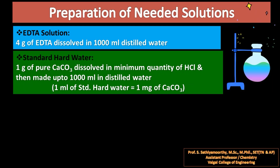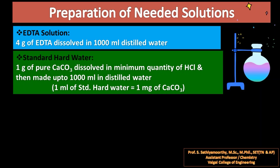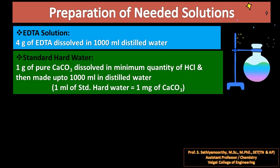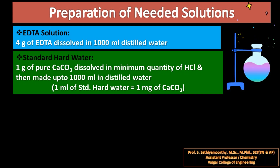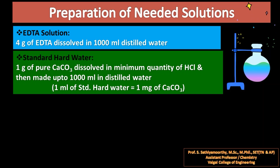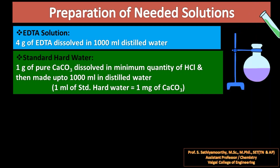To standardize the EDTA solution we need a standard solution, so we are going to prepare standard hard water. One gram of calcium carbonate is dissolved in a minimum quantity of hydrochloric acid and then made up to 1000 ml in distilled water. Calcium carbonate itself is not soluble in water, hence we dissolve it in minimum HCl. After preparing the solution, one ml of standard hard water contains one milligram of calcium carbonate.